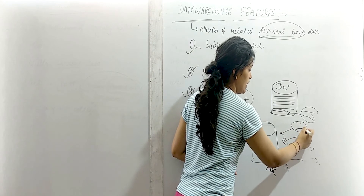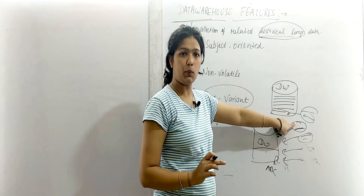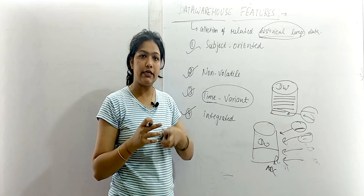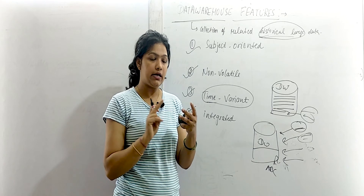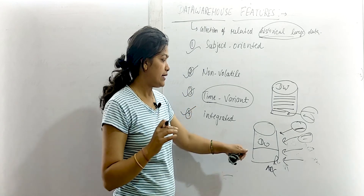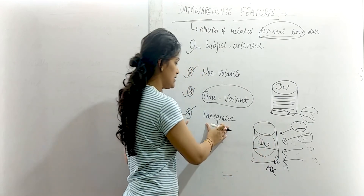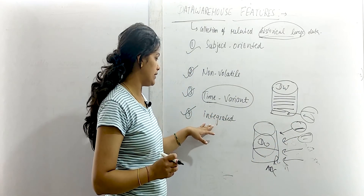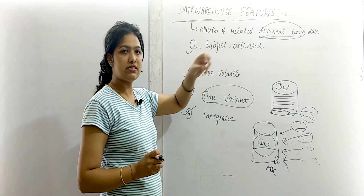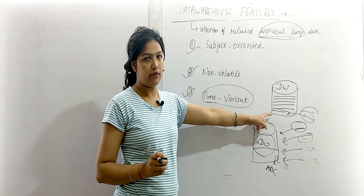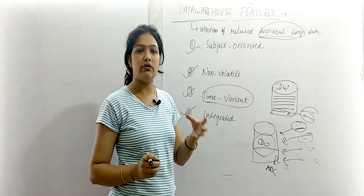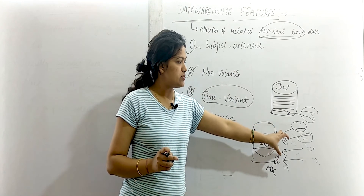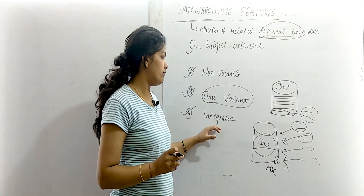Integrated means that from whatever source we are getting the data — even if each source is using some different language or format — the data is in a standardized form when stored in the data warehouse. No matter how many sources we have collected the data from, the data will be in some standard form. To summarize: subject oriented means related to a particular subject only; non-volatile means once added we cannot delete the data; time variant means all data according to time; integrated means data from different sources collected in standardized form.